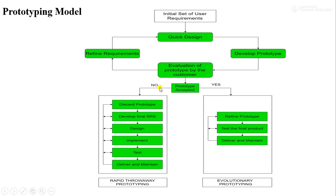Once the client accepts the prototype, there are two approaches to develop it further. The first approach is rapid throw-away prototyping, and the second is evolutionary prototyping. In rapid throw-away prototyping, we discard the prototype and rebuild the actual product from the beginning by developing the final SRS document, then performing design, implementation, testing, delivery, and maintenance. In evolutionary prototyping, we reuse and refine the prototype to develop the final product based on it.